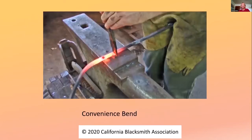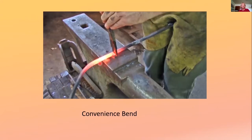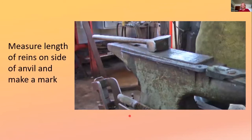You might have to do a little convenience bend to get them into a coal forge. If you have a propane forge that opens from both ends, you can probably stick the whole thing in there without a convenience bend. But cut it in half and continue to draw down your reins.